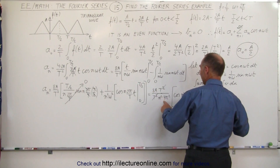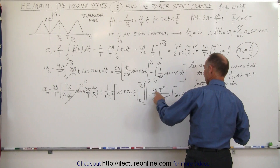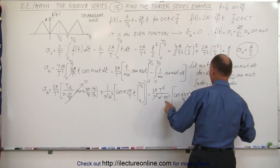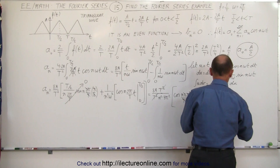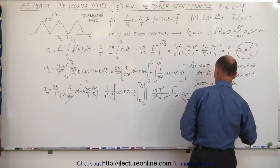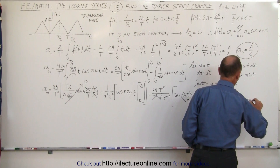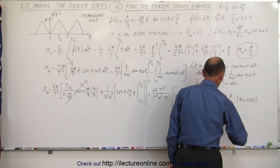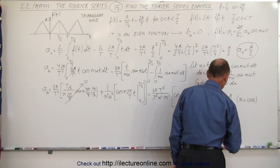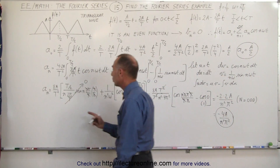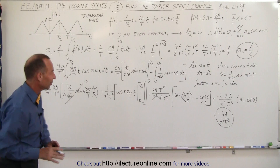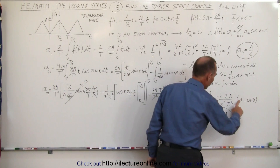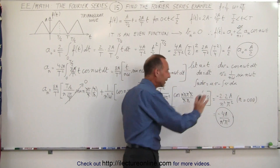Multiplying through by −2, and simplifying — the T squared terms cancel out — we get this is equal to −4A divided by n²π². These are the a_n coefficients, but only for n equal to odd values. When n is even, a_n is equal to zero.